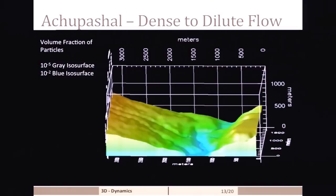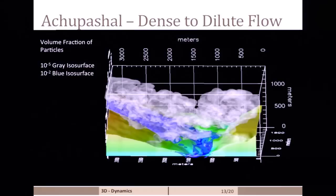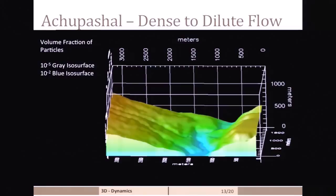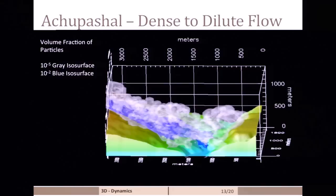We have a multiphase model. We have two isosurfaces I'm showing here. In gray is the more dilute part of the current, and in blue is you have a volume fraction of 10 to the negative two particles. What we can see is that as the flow encounters that topographic low or that river, you get the more dense part of the flow falling into the river. But the dilute, more turbulent portion of the flow is able to actually cross that river and deposit across the river in a more dilute regime, which is what we see also in the field.